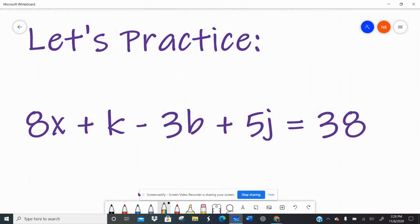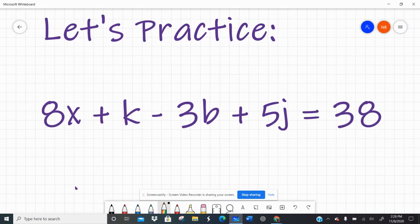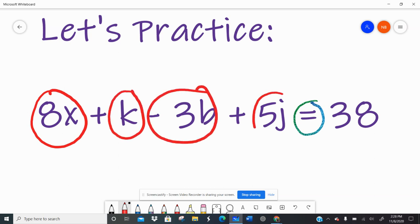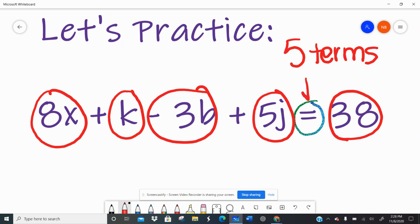All right, let's do a little practice with this equation. I know it's an equation because it has that equal sign. So I want to know how many terms does the equation have. It has 1, 2, 3, 4, 5 terms. So there's five terms to this equation. I know it's an equation because of that equal sign. There are 1, 2, 3, 4 variables. The variables are x, k, b, and j.